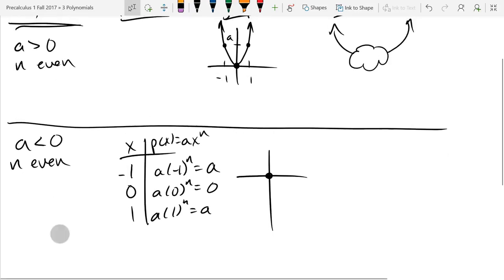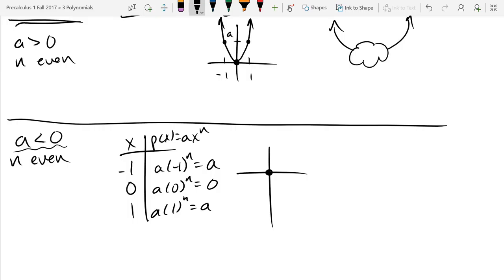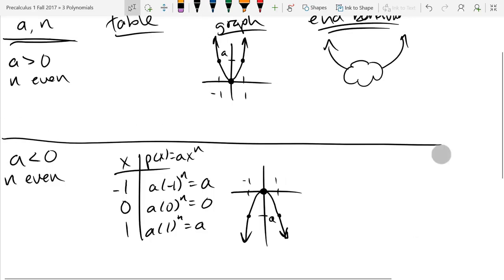So we got our 0, 0. And now when I want to graph a, you have to remember a was negative. So a is going to appear on the negative part of the y-axis. So a is going to be somewhere down here. So we'll say that's a, it's less than 0. So here is what our graph looks like. And this end behavior, you draw your cloud, and it's going to go down on both sides. So there's our end behavior.